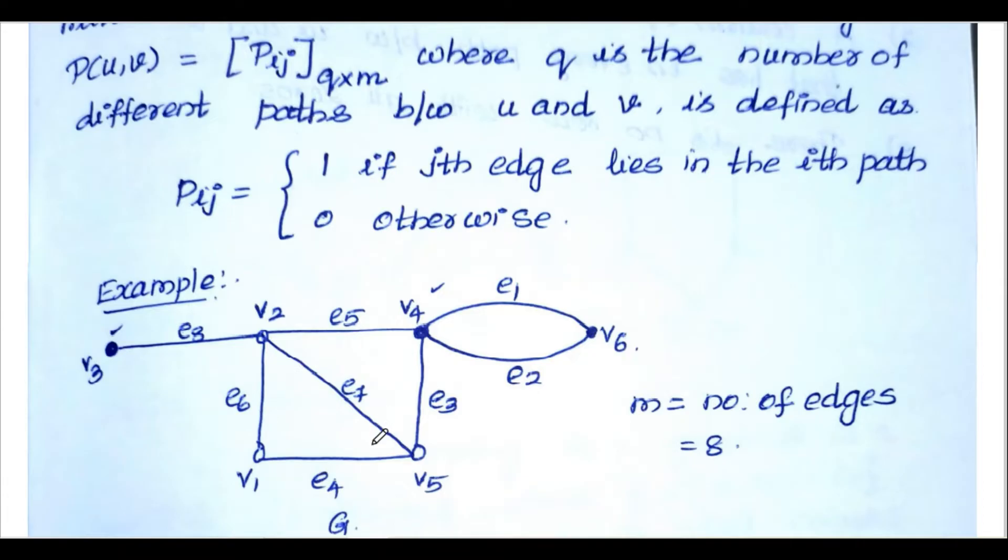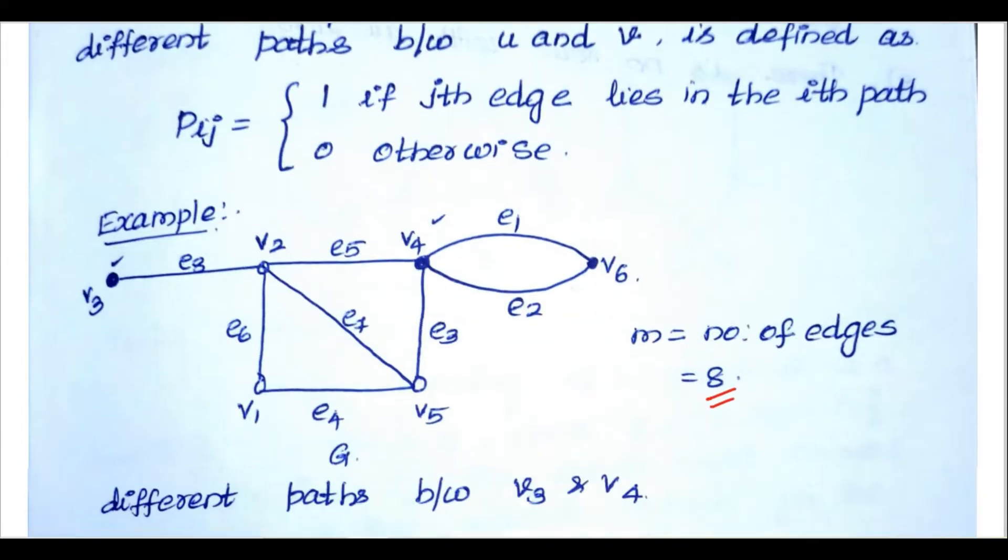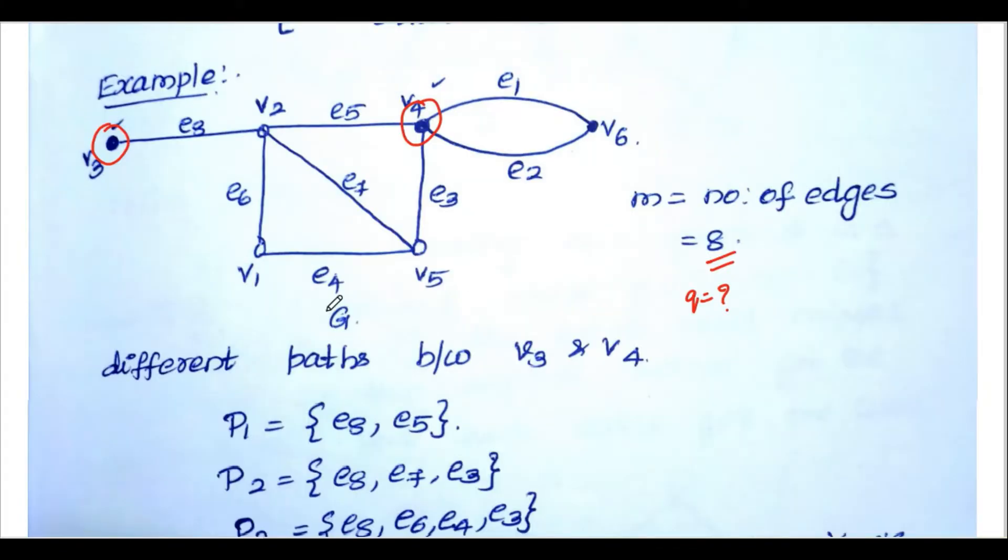Consider vertices v1, v2, v3, v4, v5, v6 and edges e1, e2, e3, e4, e5, e6, e7, e8. Number of edges is 8, so m equals 8. Let us consider two vertices v3 and v4. The path v3 to v4 directly is one path. Another path is v3, e8, v2, e5, v4.